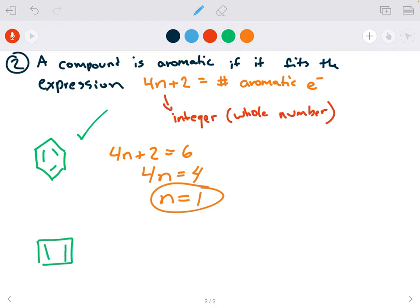Cyclobutadiene. 4n plus 2 equals 4. 4n equals 2, n equals 1 half. It is not aromatic. But notice what would work for an anti-aromatic expression, rather than 4n plus 2, you would have 4n equals 4. In that case, n equals 1.